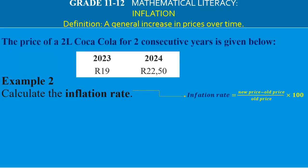In example two, you have to calculate the inflation rate — not the inflation amount anymore, but the inflation rate or inflation percentage. Here is the formula: you take the new price minus the old price, divide by the old price, and multiply by 100.